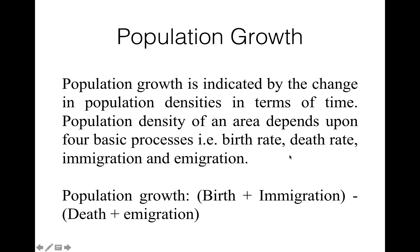The population shows positive growth when more individuals are added by natality and immigration than are lost. The population shows negative growth when more individuals are lost by mortality and emigration than are added. Therefore, population growth = birth rate + immigration − death rate − emigration.